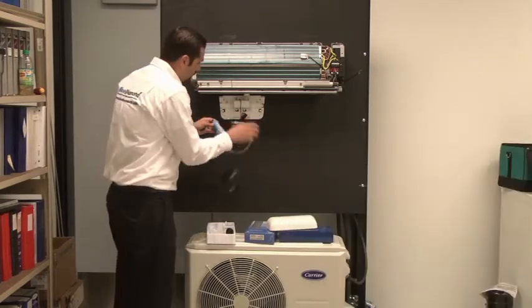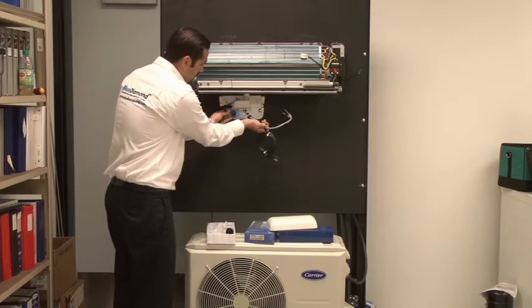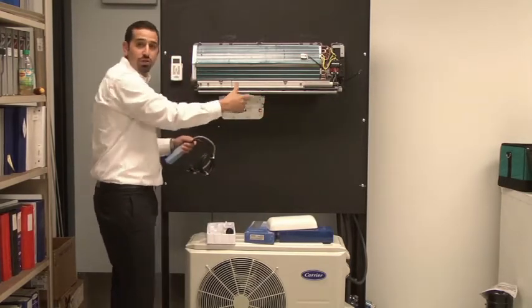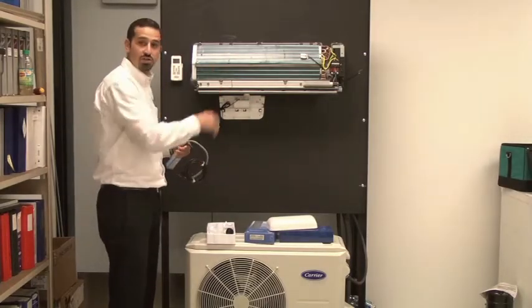What we'll do is we'll mount the micro glue here as you can tell it'll just clip right in. Then what we'll do is we'll fish these wires. Once we're done fishing the wires we'll show you how to properly install them in the air handler.